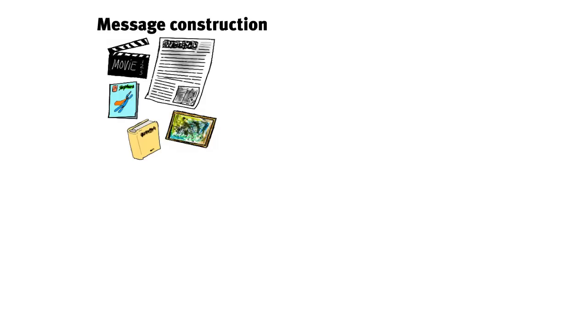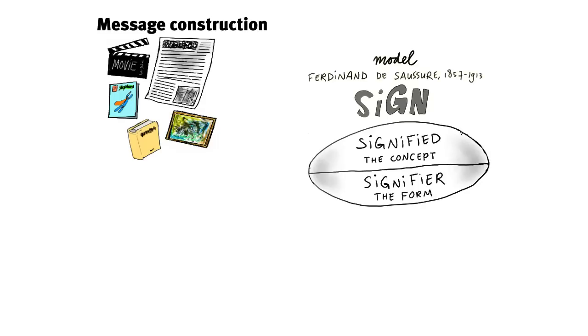The most influential model from semiotics was perhaps this 19th century model by Ferdinand de Saussure, in which he explained that a sign was made up of two things. First of all, a signifier, which is the form of the sign, and secondly, the concept it represents, the signified.